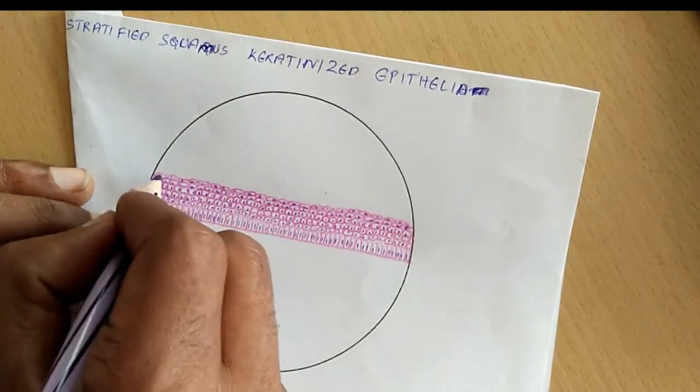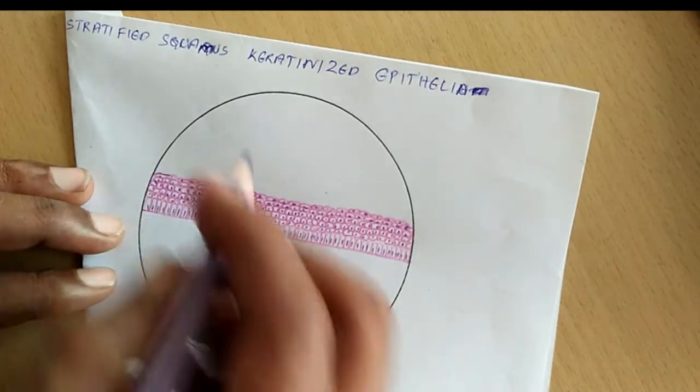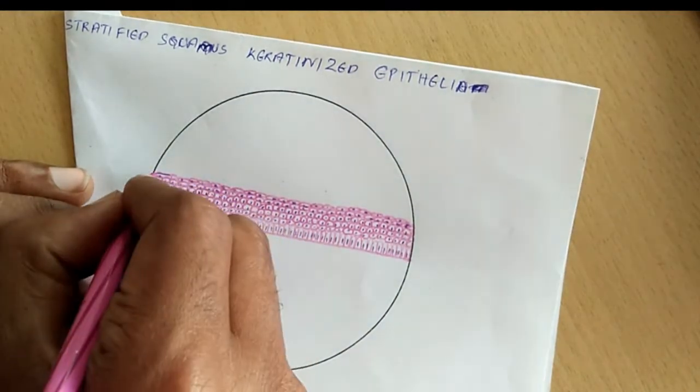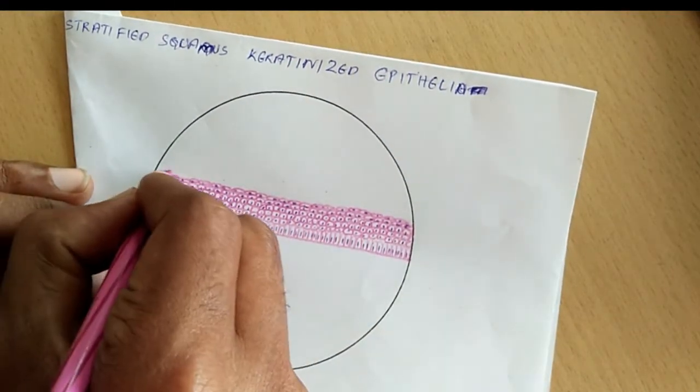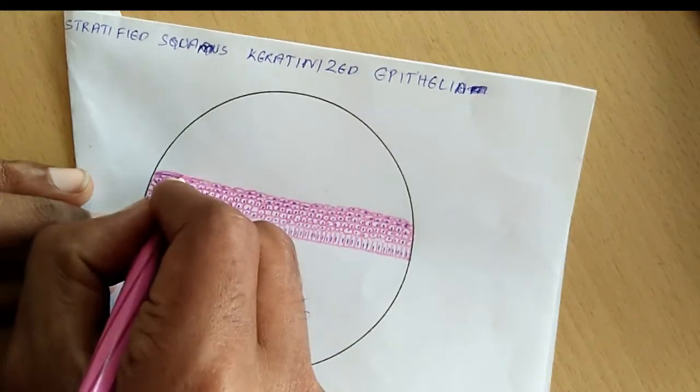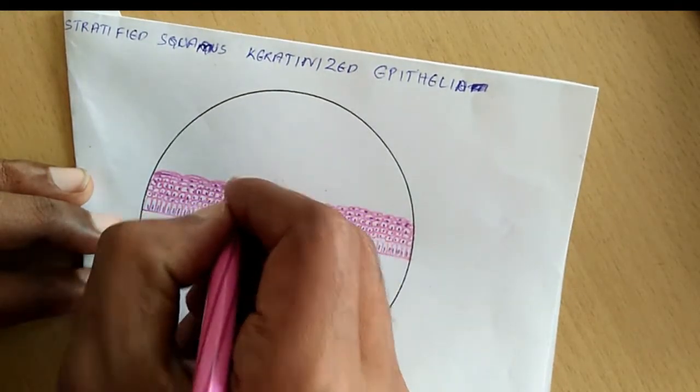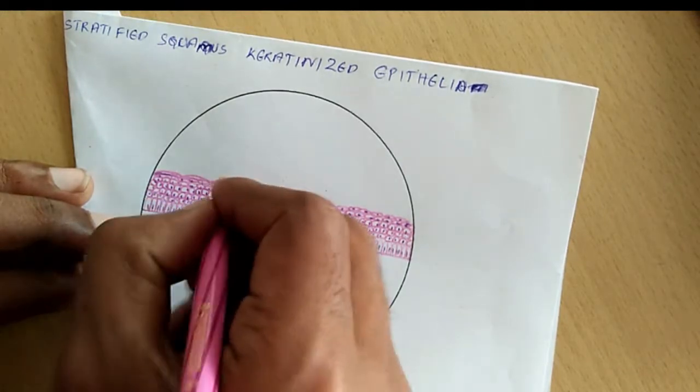Now on top of it, we can draw the really flat cells here, the flat cells can be drawn. One or two layers.